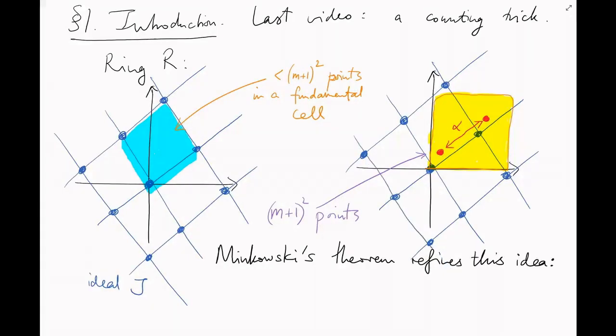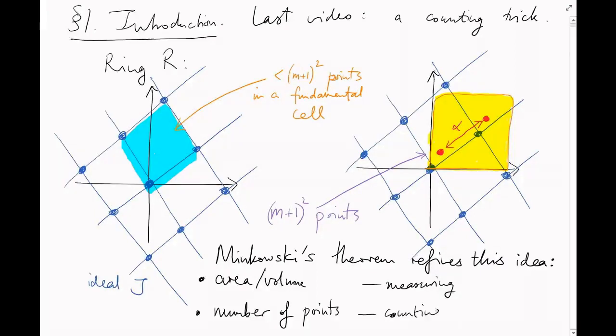Minkowski's theorem is a refinement of this idea. Last video, I talked about the norm of a sub-lattice, and I said that it could be thought of as a kind of area or volume, which is a geometric concept, or as the number of points inside a fundamental cell, which is a combinatorial concept. One is measuring, the other is counting. Minkowski showed that if you're careful about it, you can often relate the two.